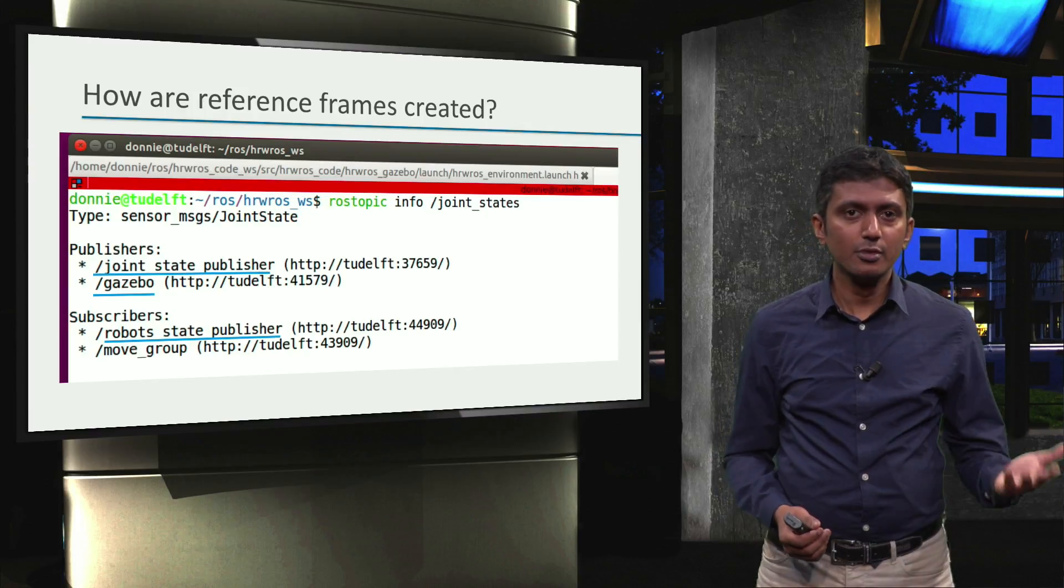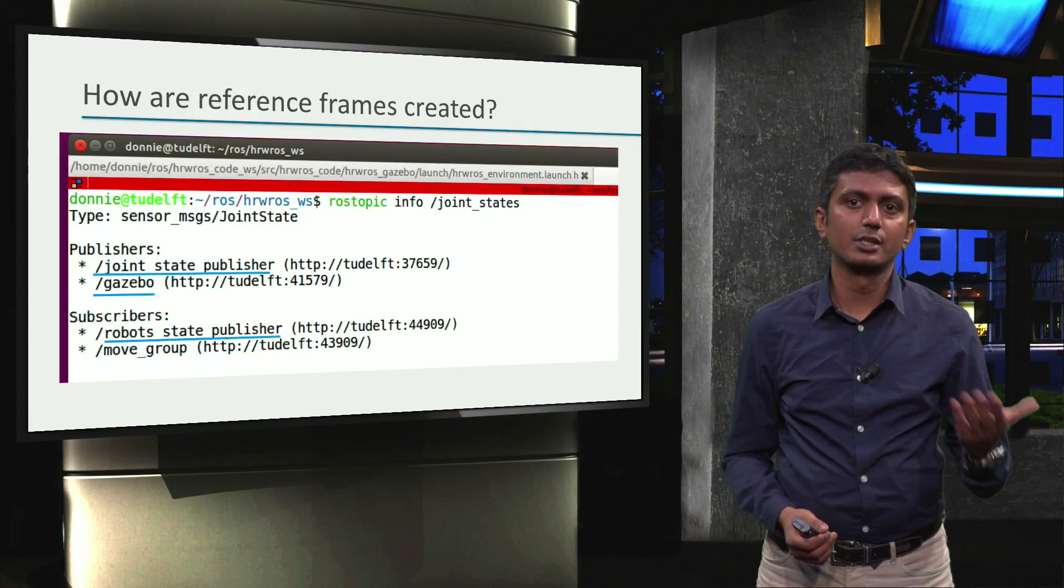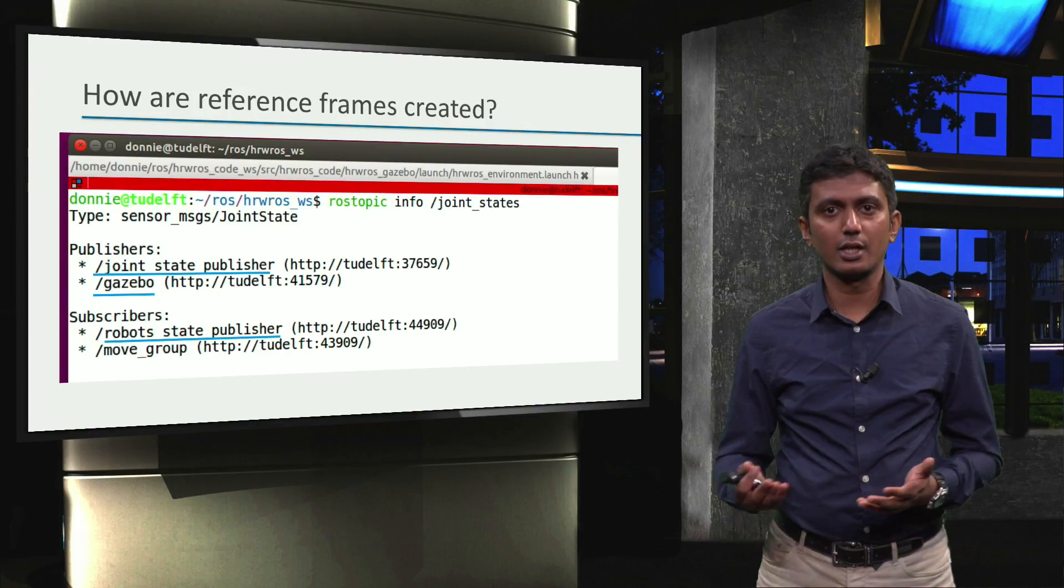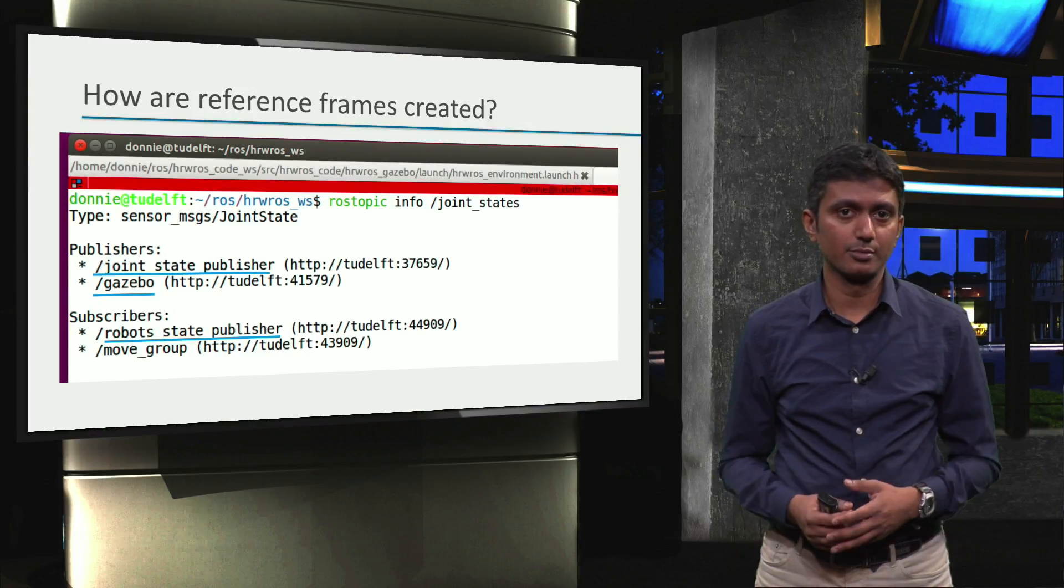And naturally, the move group node from week 4 is certainly using the joint states for keeping track of the movement of the two robot arms.